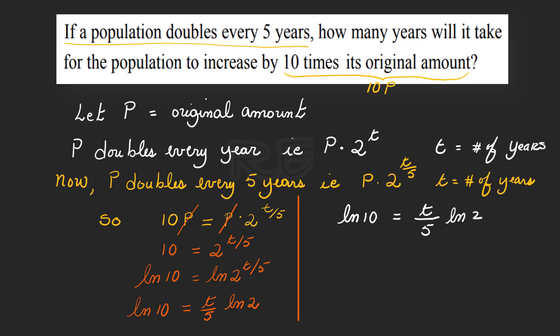So, t over 5 will be equal to, divide both sides by ln 2, ln 10 over ln 2. And t is equal to, multiply both sides by 5, 5 times ln 10 over ln 2.